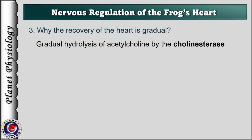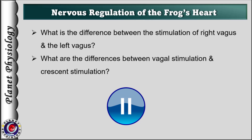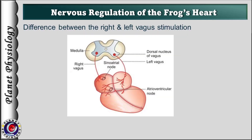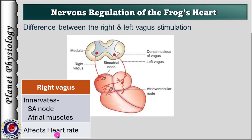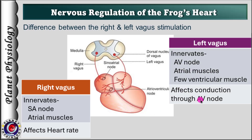Now pause the video and try to answer: what is the difference between stimulation of right and left vagus, and what are the differences between vagal and crescent stimulation? In human heart, right vagus stimulation mainly decreases heart rate because it innervates the SA node. In contrast, stimulation of left vagus mainly decreases the rate of impulse conduction through the AV node. Both vagus nerves innervate atrial muscles and hence also decrease atrial force of contraction, though this effect is not appreciable. As ventricular muscles are very sparsely innervated by the vagus, there is no effect on ventricular force of contraction.